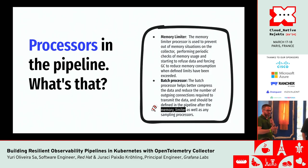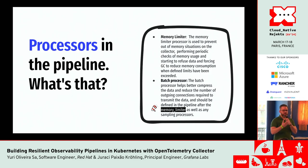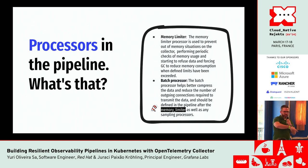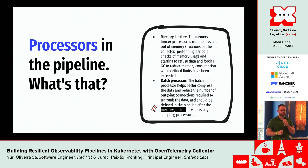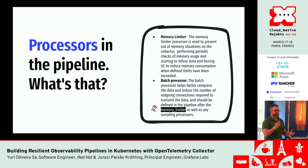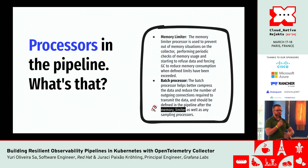Now we understand how receivers work and some strategies we can use in our observability pipeline. Once telemetry data reaches the OpenTelemetry Collector, it needs to be processed, and we have to configure the processors. We brought two examples of processors: the memory limiter and the batch processor. The memory limiter limits the amount of memory that the OpenTelemetry Collector uses to ingest data, and to make an observability pipeline more resilient, we have to limit this memory amount.